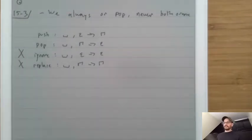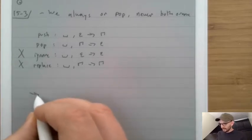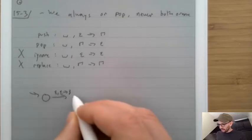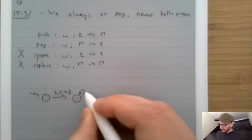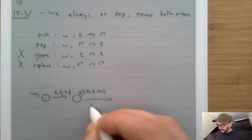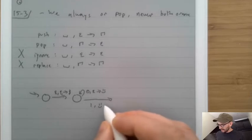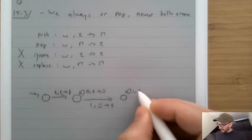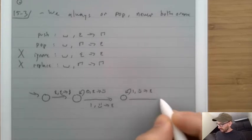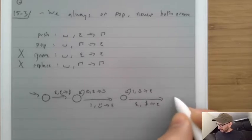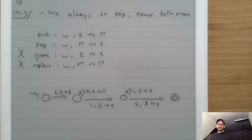Our zero-to-n, one-to-n machine follows this rule too. We go to start state, push a dollar-sign. In the loop state, if we see a zero, push a happy-face. If we see a one and a happy-face on the stack, pop it off. If we see nothing and a dollar-sign, pop it off and go to the accepting state. So our machine already followed these rules.